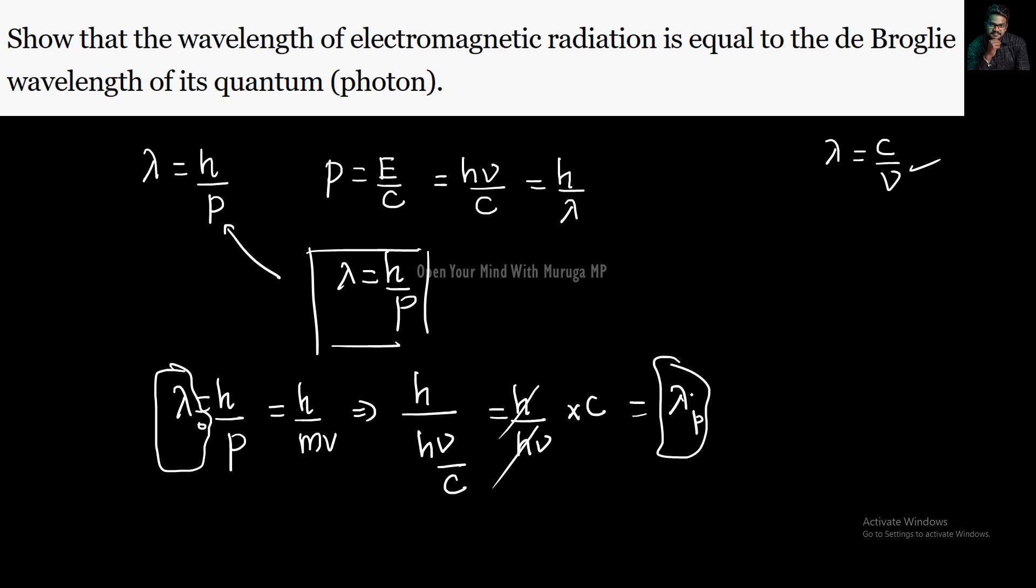So we showed that lambda is equal to lambda, photon wavelength is equal to de Broglie wavelength. This is the same thing, you will understand what it is. Thank you, help others with a smile.